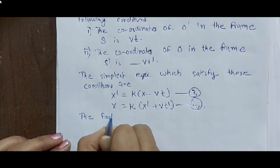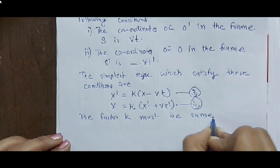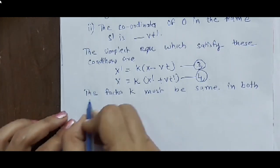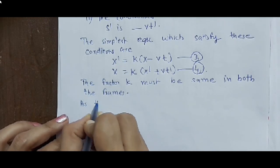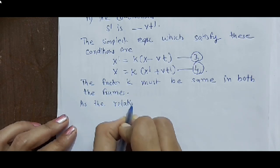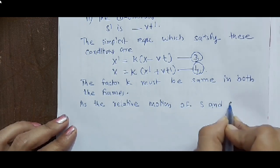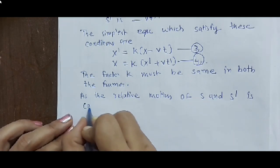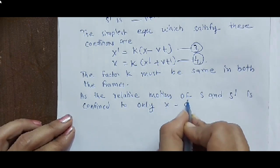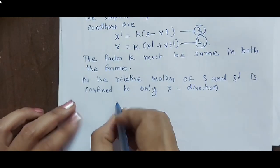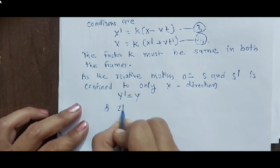As the relative motion of S and S' is confined to only the x direction, there is no change in y and y', so y' = y and z' = z.